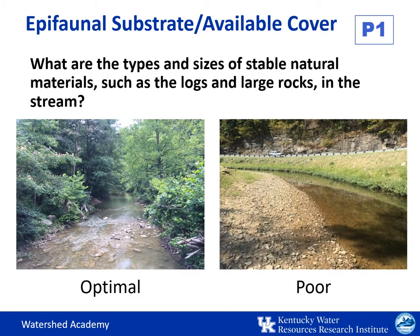The first parameter is epifaunal substrate and available cover, which is generally the same for both high and low gradient streams. This refers to the available cover for animals that live on the bottom of the stream, including submerged logs, undercut stream banks, and larger rocks or cobble that appear to have been in place for a while and are unlikely to move. We'll ideally see these habitat types around the riffle areas of the stream that are favorable for fish colonization and cover. Since they're largely around riffles, we're more likely to see them in higher gradient streams, and we rank those two types of streams slightly differently for this characteristic.